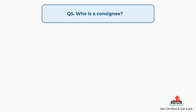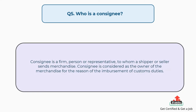Question number five: who is a consignee? The answer is: a consignee is a firm, person or representative to whom a shipper or seller sends merchandise. The consignee is considered as the owner of the merchandise for the purpose of the reimbursement of customs duties.